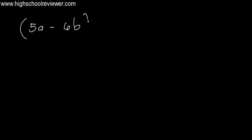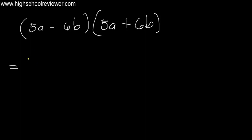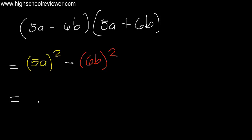Let's have another example. We have the quantity of 5a minus 6b multiplied by the quantity of 5a plus 6b. What will be our answer? The steps are still the same — it is still the square of the first term: 5a raised to the power of 2, minus the square of the second term, which is 6b raised to the power of 2. Expanding this, we get 5 squared which is 25a squared, minus 6 squared which is 36, times b squared. So our answer is 25a squared minus 36b squared.